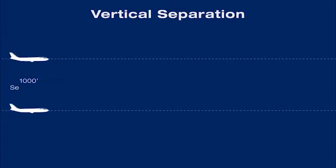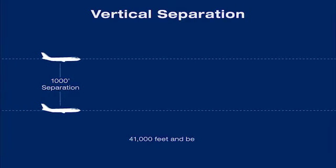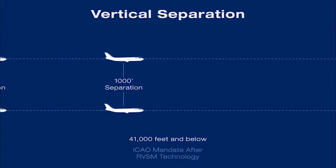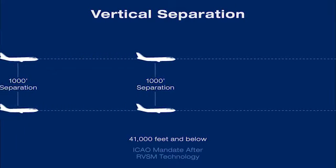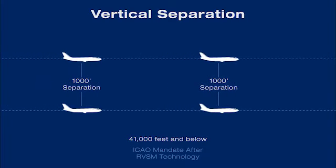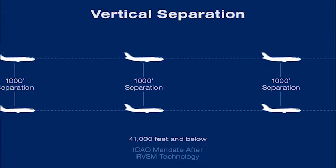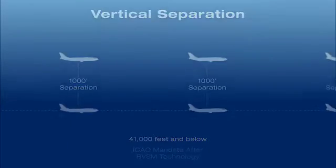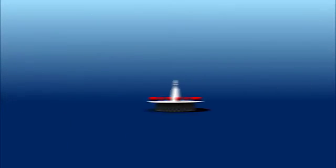If aircraft don't meet the lateral separation requirements, they must remain a minimum vertical distance from each other. Below 41,000 feet, the minimum vertical distance is 1,000 feet.